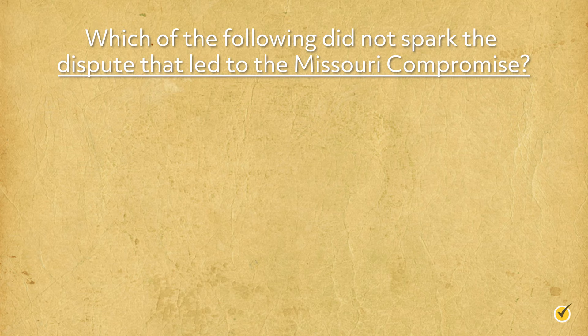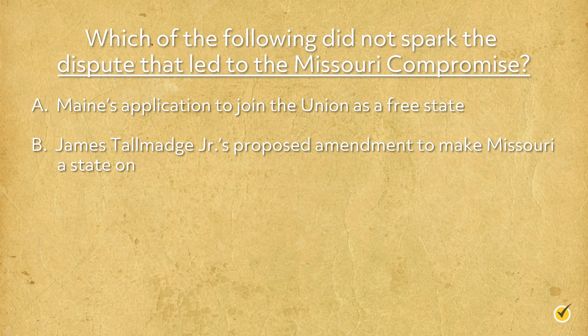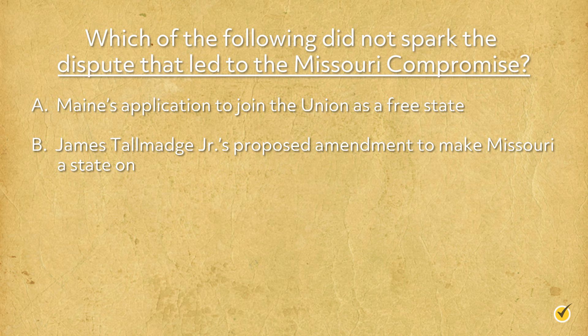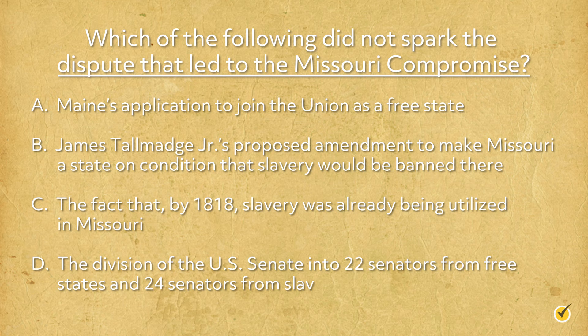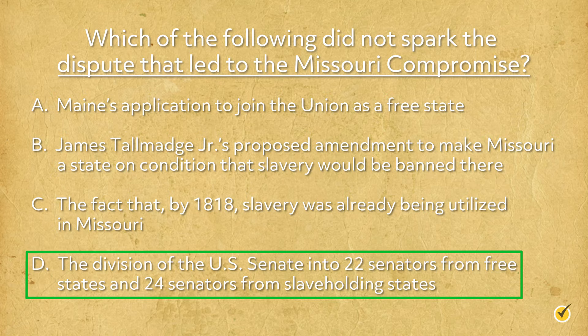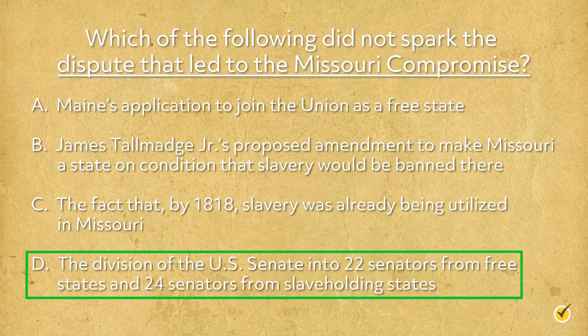Let's wrap things up with a review question. Which of the following did not spark the dispute that led to the Missouri Compromise? A: Maine's application to join the Union as a free state? B: James Talmadge Jr.'s proposed amendment to make Missouri a state on condition that slavery would be banned there? C: The fact that by 1818 slavery was already being utilized in Missouri? D: The division of the U.S. Senate into 22 senators from free states and 24 senators from slaveholding states? The correct answer is D. Thanks for watching, and happy studying.